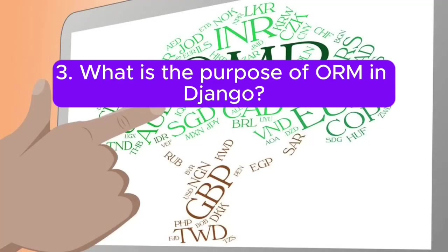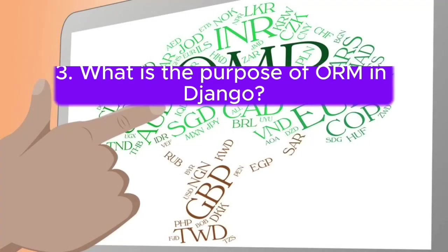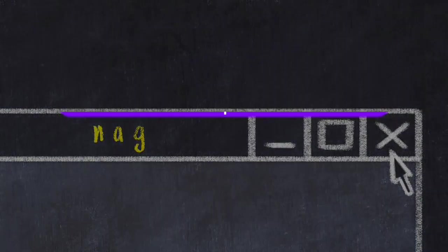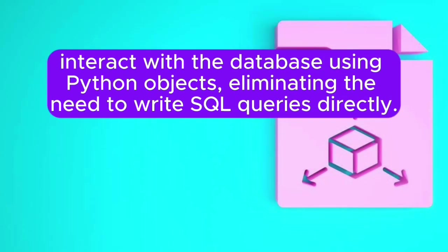Question 3: What is the purpose of ORM in Django? Answer: ORM (object relational mapping) in Django enables developers to interact with the database using Python objects, eliminating the need to write SQL queries directly.